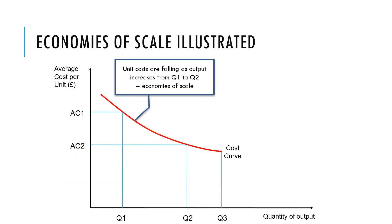Often this is presented as a cost curve. In this chart we can see average cost per unit on the y-axis and the quantity of output on the x-axis, and the cost curve shows the average cost going down as we increase the quantity of output.